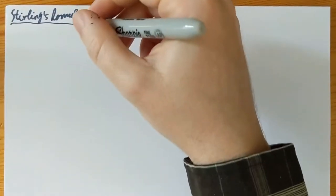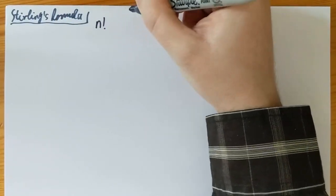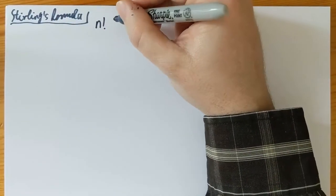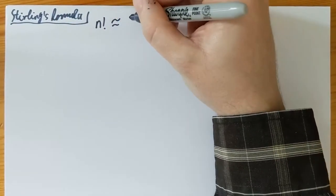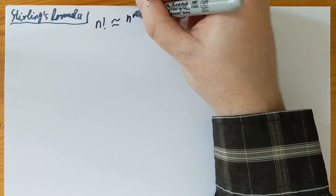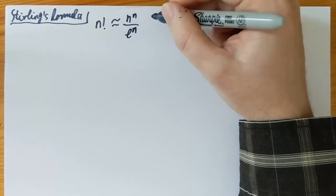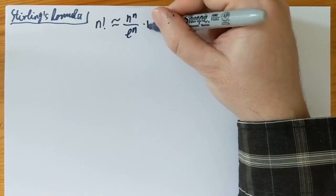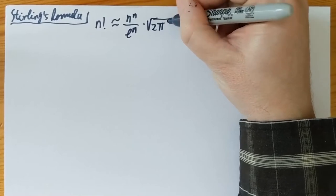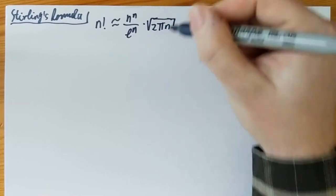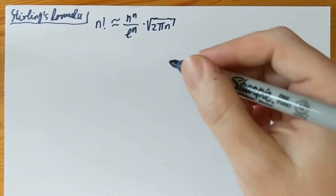Stirling's formula is a statement about n factorial. It says that n factorial is approximately equal to n to the n over e to the n, times the square root of 2πn. That's not a precise mathematical statement.